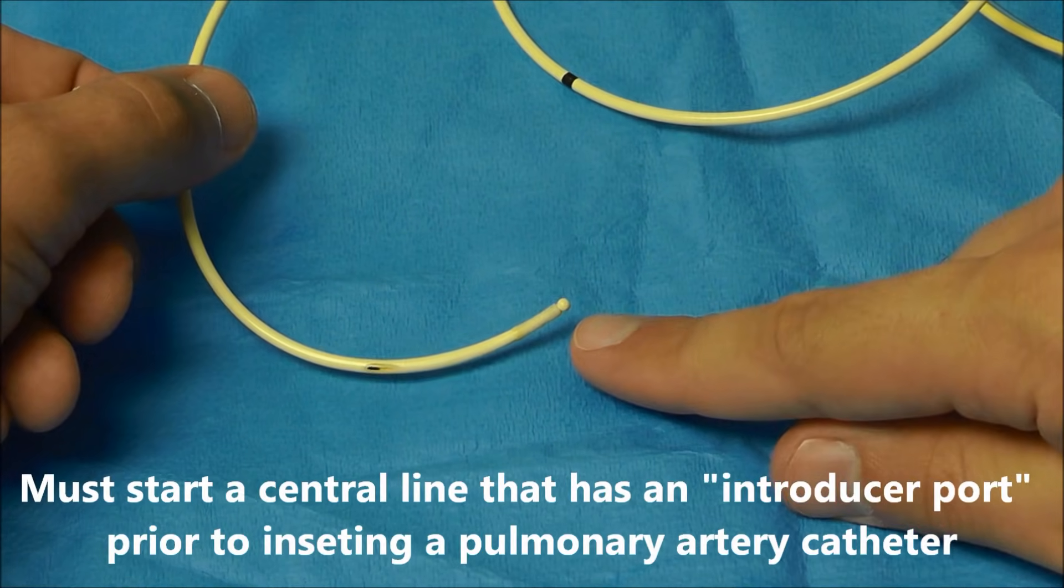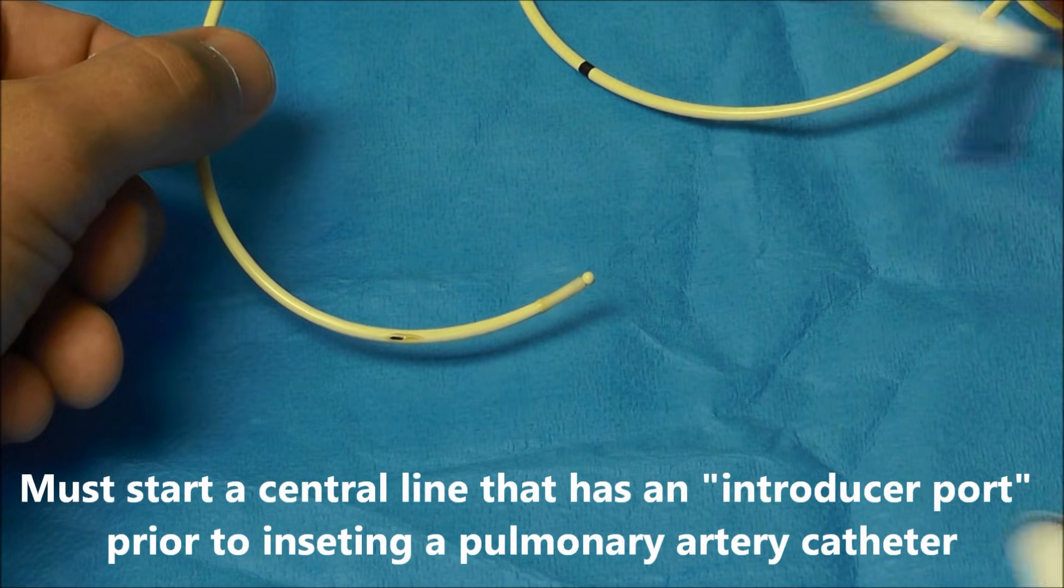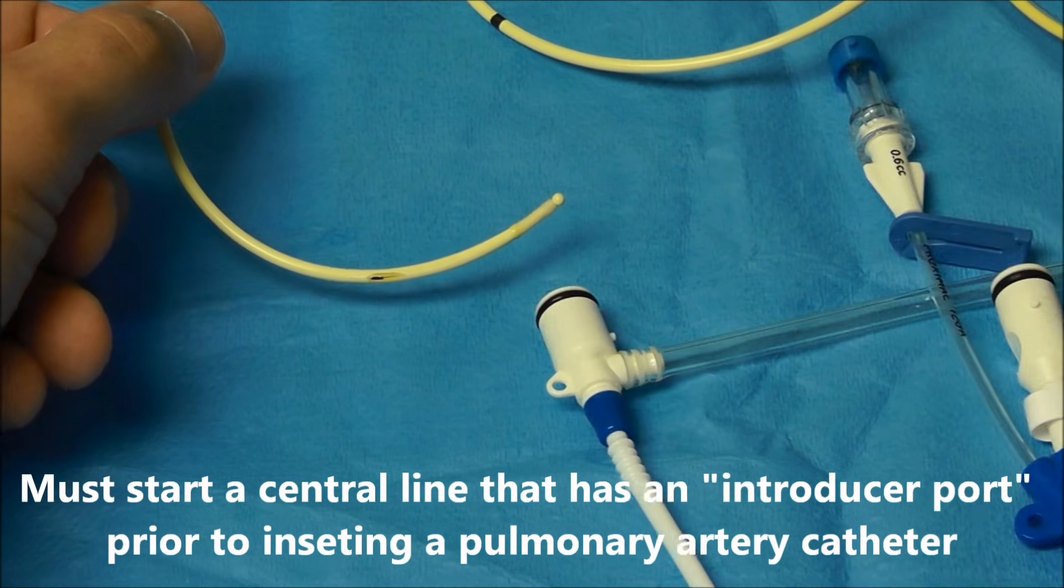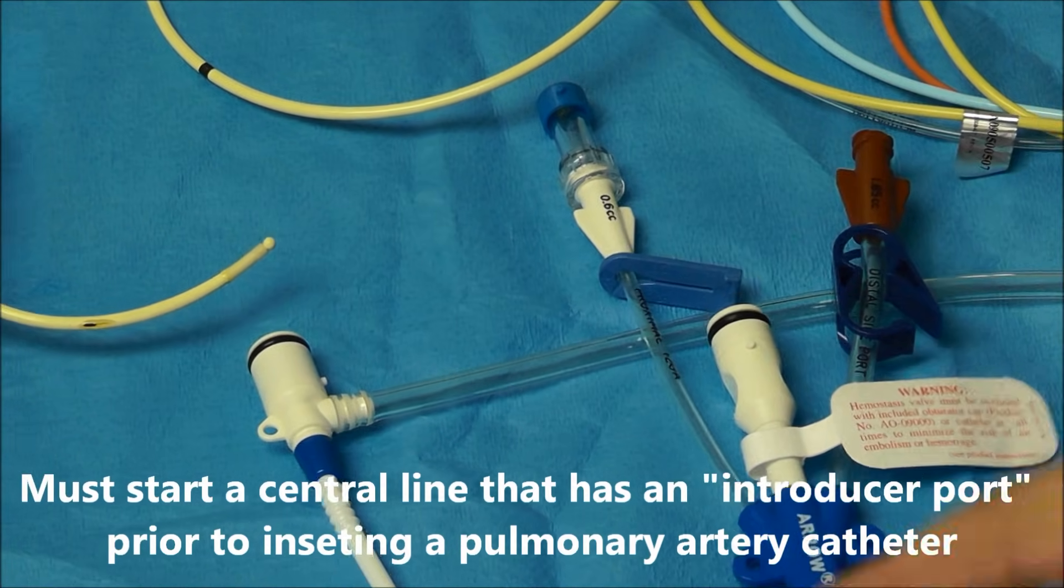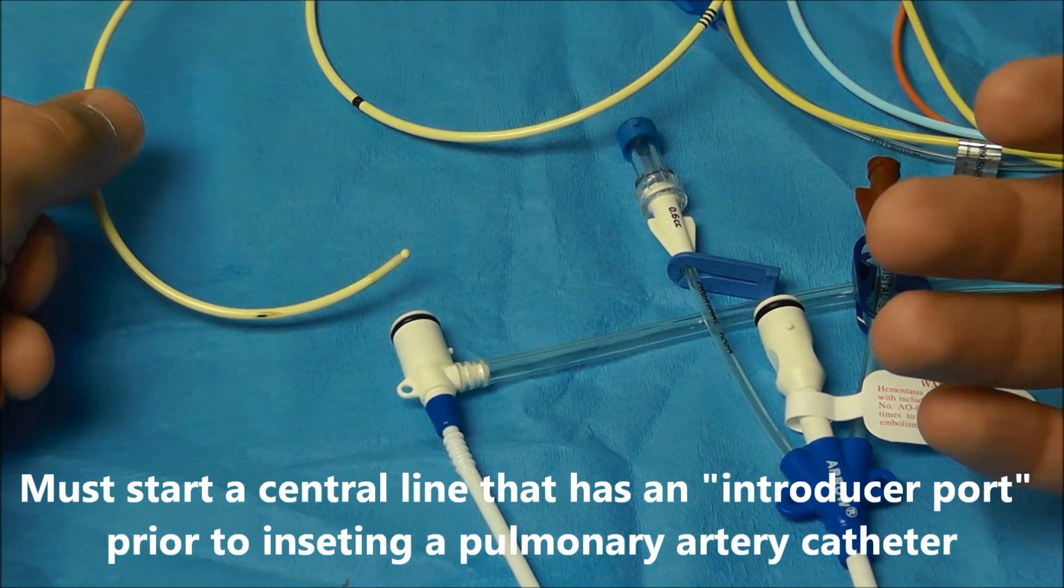In order to get this into a pulmonary artery, you have to start a central line with a central catheter that has an introducer port, and then you're going to insert the Swan through the introducer port and guide it into the pulmonary artery.